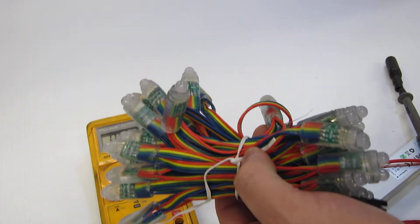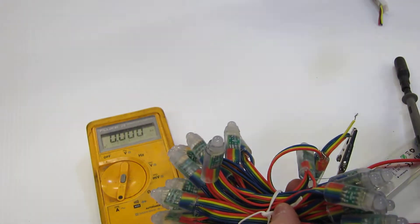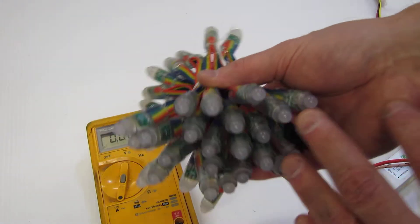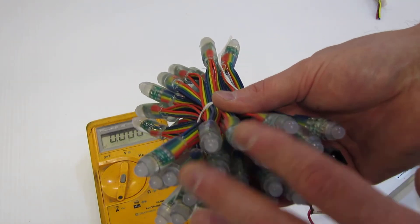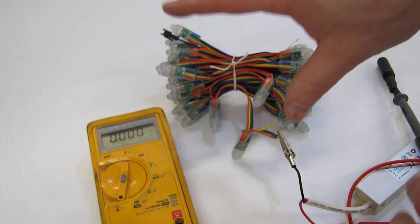The same process applies to modules and many different kinds or even strip. In this particular case, I've got 50 RGB dumb nodes here, and I'm going to measure the current draw of all of these nodes.